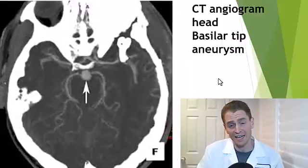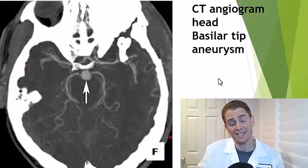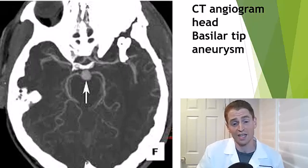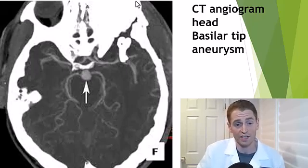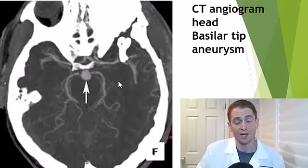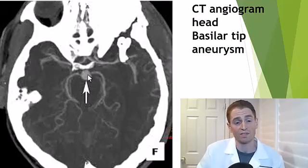Let's switch to a study that looks at the integrity of the blood vessels. This is a CT angiogram — a CT scan where contrast dye is injected into the vein prior to the scan so that it fills up the arteries and the blood vessels are much more visible. Here we're able to see an aneurysm or outpouching of the blood vessel at the tip of the basilar artery.